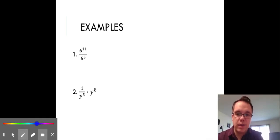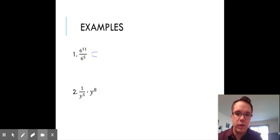So our first example is 6^11 over 6^5. If we follow our property rule, our base will stay 6, but our exponent, we'll take 11 and we'll subtract 5. So we'll get 6^6.